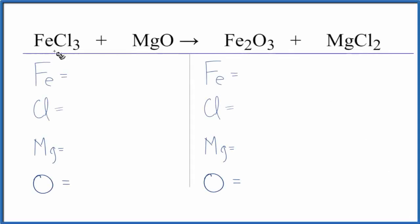In this video we'll balance the equation for FeCl3 plus MgO, this is iron three chloride plus magnesium oxide. Let's count the atoms up on both sides of the equation. So we have one iron, three chlorine atoms, one magnesium,